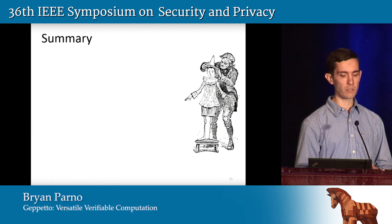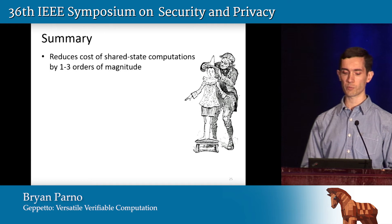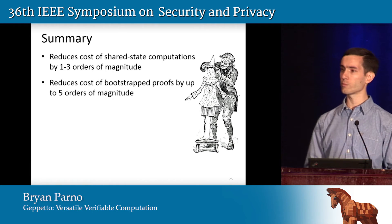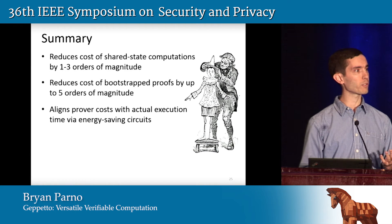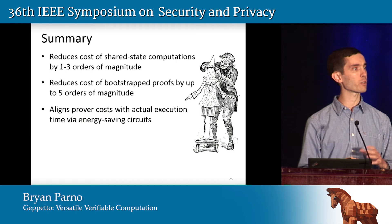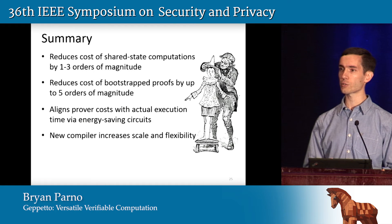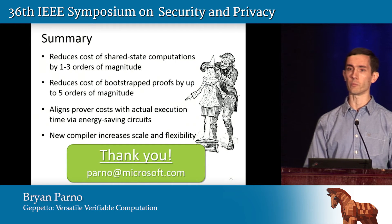To summarize: with Geppetto we've been able to reduce the cost of shared-state computations such as MapReduce and loops by one to three orders of magnitude. We've been able to reduce the cost of bootstrap proofs by up to five orders of magnitude. We're able to align prover costs with actual runtime execution rather than worst-case execution through energy-saving circuits. And all of this is supported by a new compiler infrastructure that increases the scale and flexibility of what we can support.